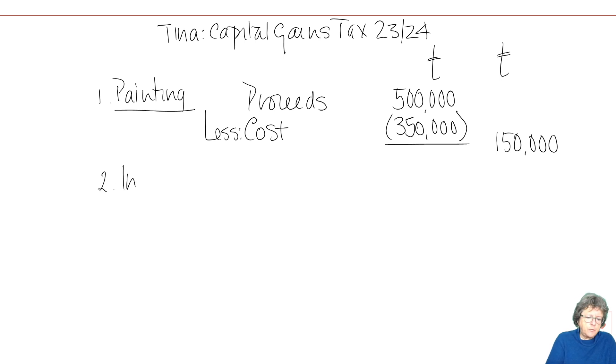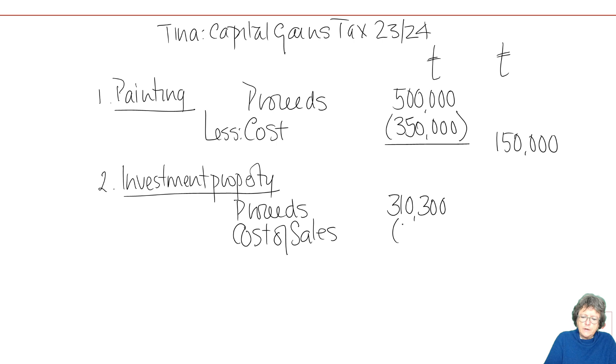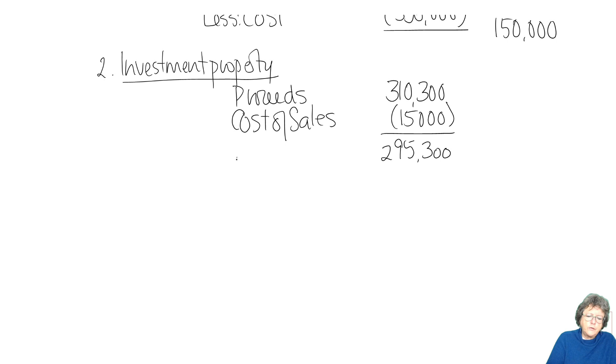The second one was the investment property. Again, we want proceeds and for this the proceeds were £310,300 and we had some cost of sales with that one of £15,000 which gives us a net figure of £295,300. Then we will deduct the purchase price or the cost and that was £200,000 which leaves us with £95,300 as our answer and again either do it in the computation like this or as a working.